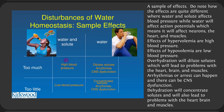The effects of these conditions differ significantly between water-and-solute imbalances and pure-water imbalances. Water and solute affects blood pressure, while water alone affects electrolyte concentration, which affects action potentials — meaning it affects neurons, the heart, and muscles. Effects of hypervolemia include high blood pressure; hypovolemia causes low blood pressure. Overhydration dilutes solutes, leading to problems with the heart, brain, and muscles — arrhythmias, arrest, or CNS dysfunction. Dehydration concentrates solutes, causing the same. Always remember that if you can't use your muscles, you can't use your respiratory system.